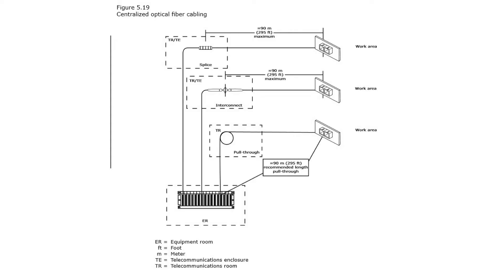But I thought we were limited to 90 meters or 295 feet for every type of cable in the horizontal distribution system. So how does this work? If you look at Figure 519 in your TDMM, you'll see three different scenarios. The first shows a pull-through in the TR and a total distance of 90 meters or 295 feet. The second shows the cable interconnecting in a TR and then extending another 295 feet or 90 meters. The third shows the cable splicing in a TR and then extending another 90 meters or 295 feet.